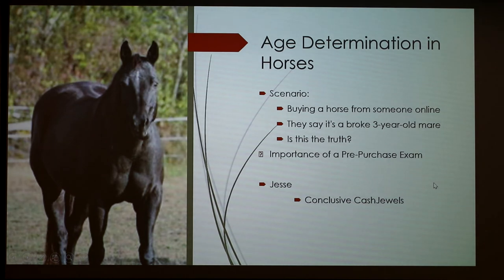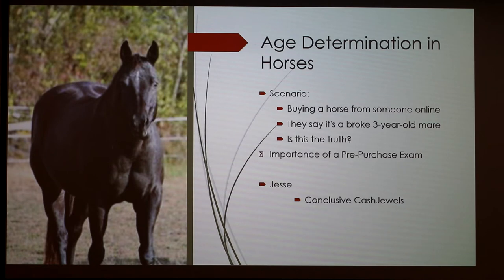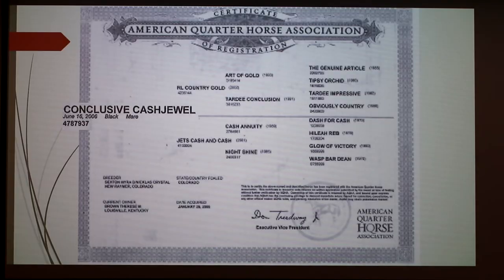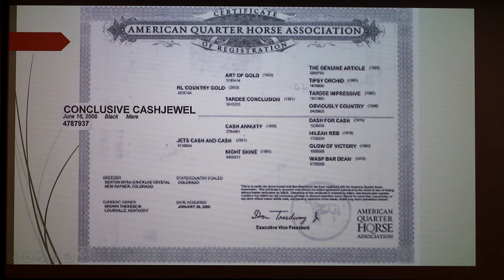Now, age determination in horses and the importance of a pre-purchase exam. If you want to buy a horse from someone online and they say it's a broke, trained mare — is that true? The best way to verify the age of a horse is by registration papers. This is my horse Jessie — her registered name is Conclusive Cast Jewels. I have a picture of her registration papers on the next slide. The papers show her parents, grandparents, and beyond — her registered name, birthday, color pattern, and registration number.